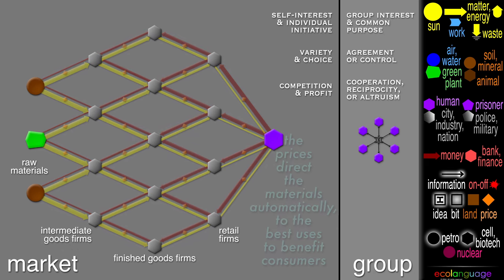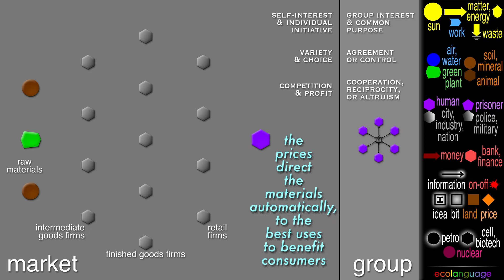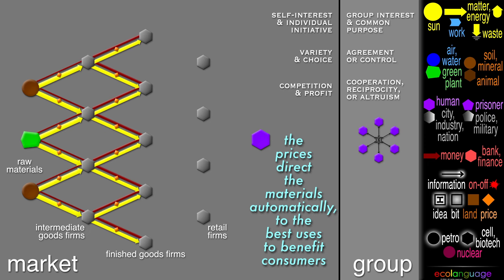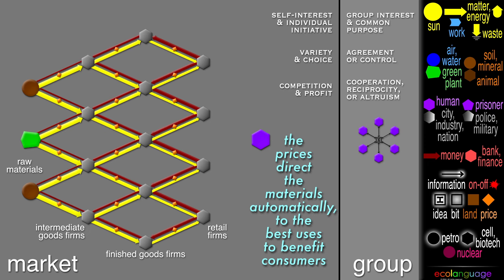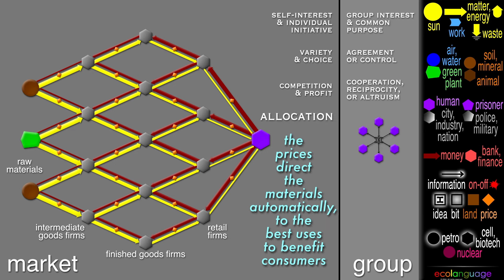In the market system as a whole, the prices direct the materials automatically to the best uses to benefit the consumers. This is called allocation.